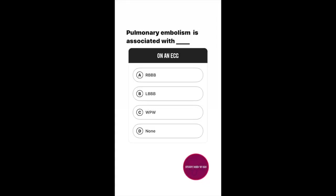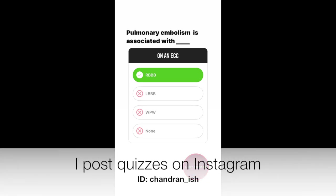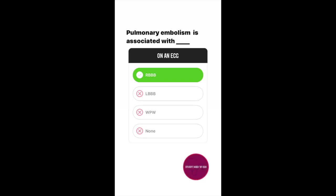Pulmonary embolism can have a right bundle branch block. This is because in pulmonary embolism, the right ventricle gets distended due to fluid overload. There could also be subendocardial ischemia of the right ventricles.